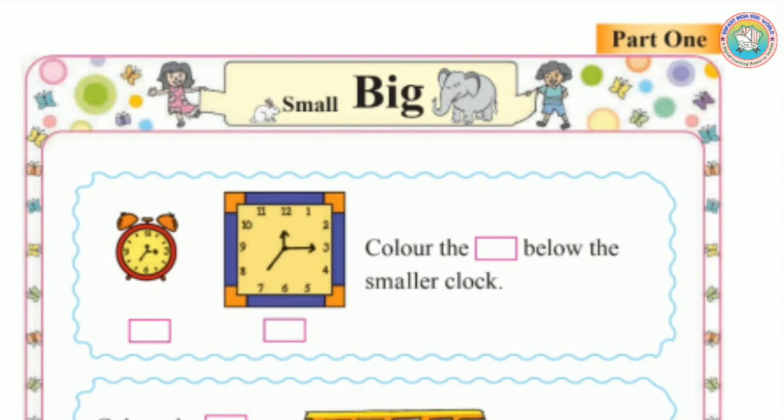Something which is very huge, very big to see, we call that object as big. A few things like this which are very big, we call big.